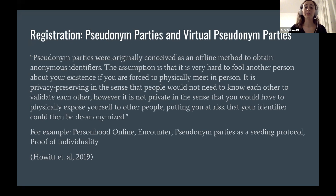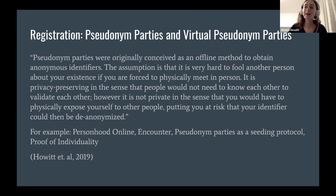There's a concept called a pseudonym party, in which people gather together in a physical or virtual place all at the same time. This is interesting since getting people physically together makes it really hard to fake or abuse the system. But it might not be the most inclusive type of system, since our goal is to distribute a worldwide basic income and not everyone can participate. You could use that as a seeding protocol integrated with another approach to build a more inclusive identity system.